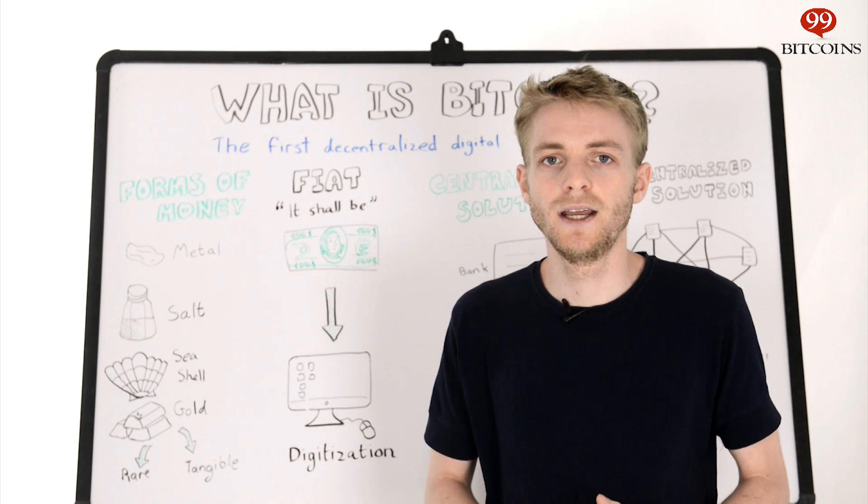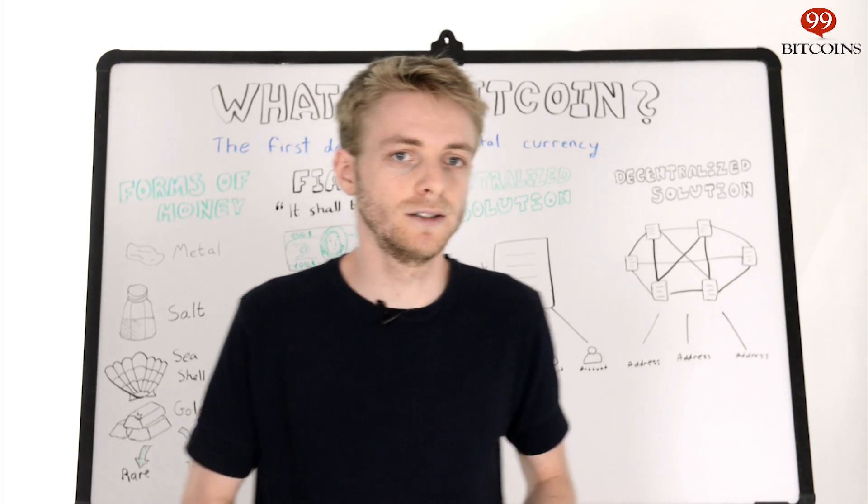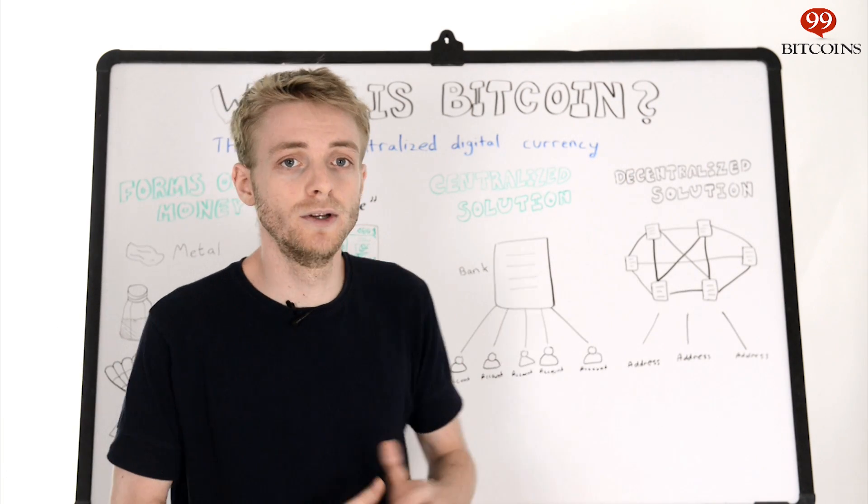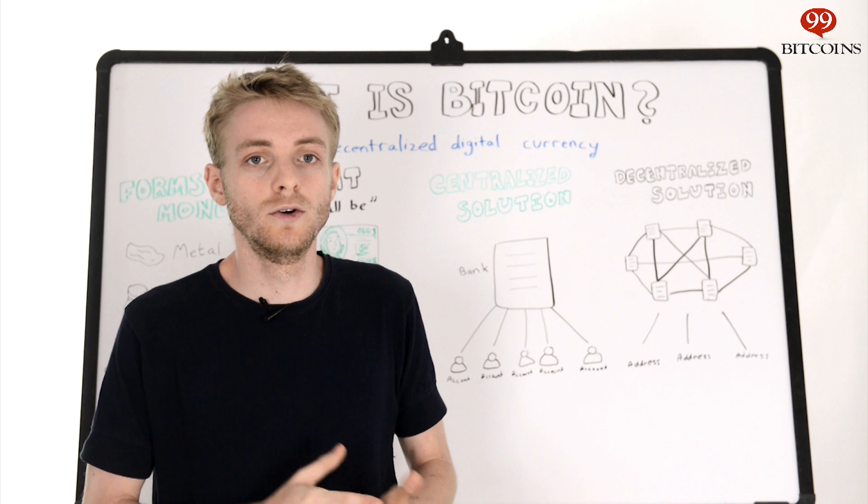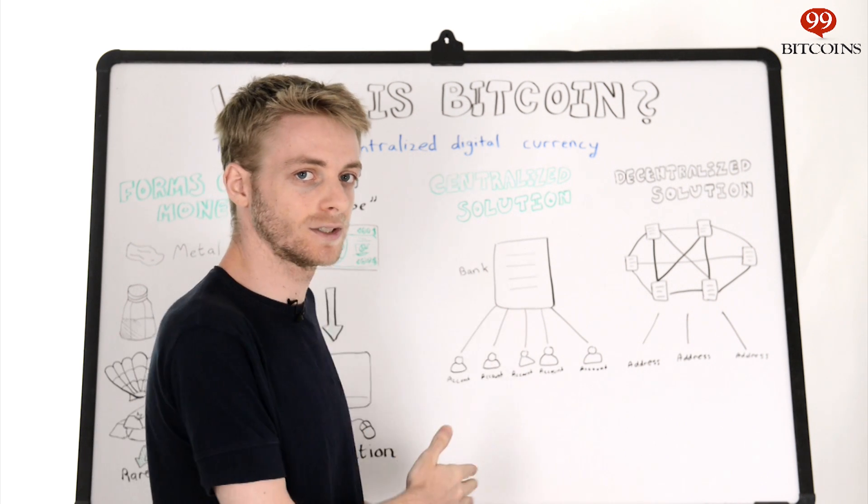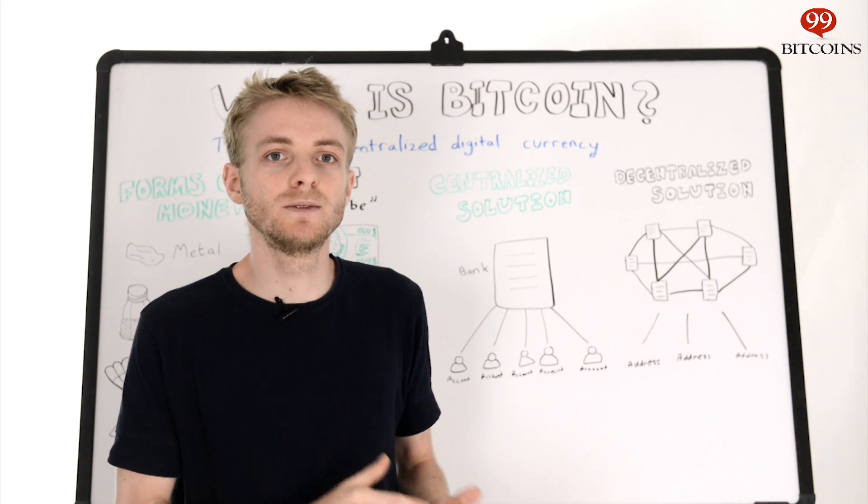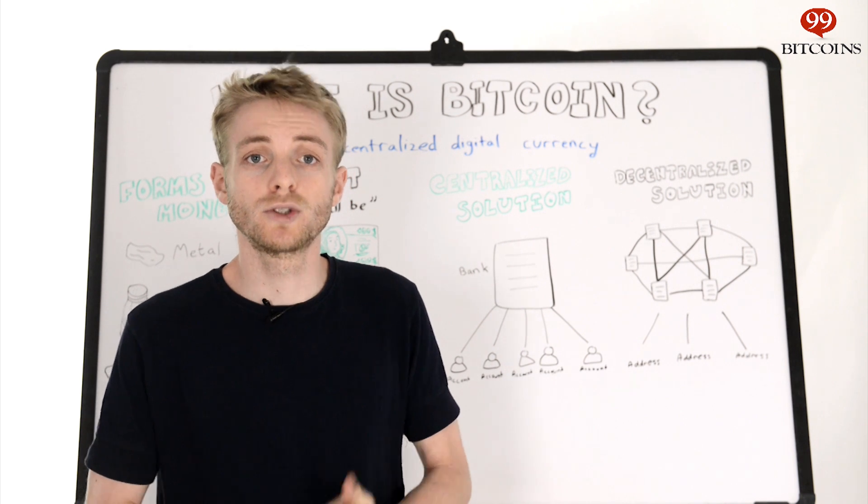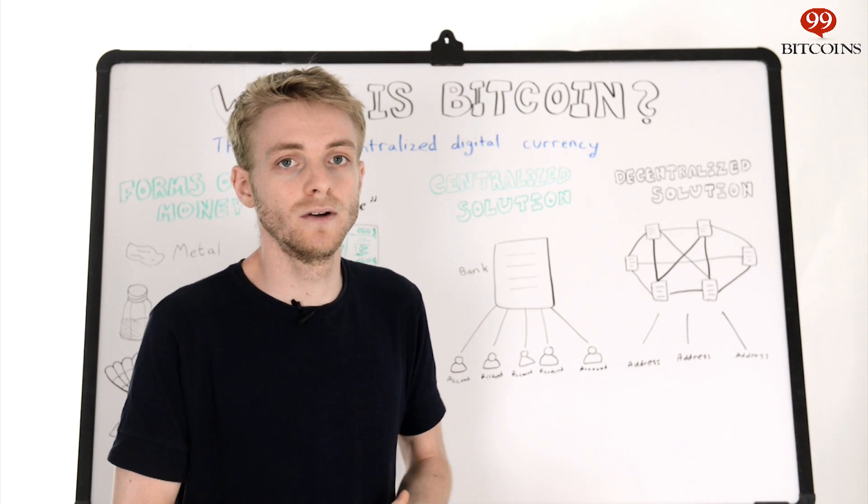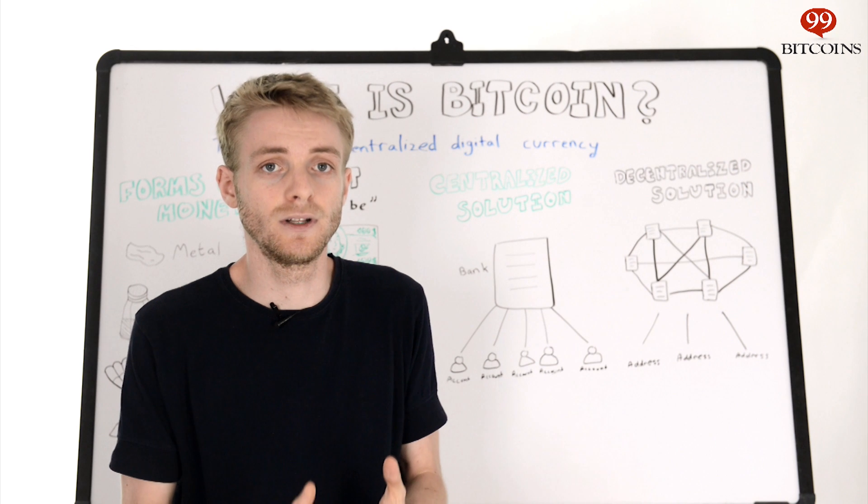The solution that banks use today is actually a centralized solution. They keep a ledger on their computer which keeps track of who owns what. Everyone has an account in this ledger and the ledger keeps a tally for each account. We all trust the bank, the bank trusts their computer, and so the solution is centralized in the bank.